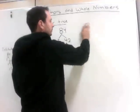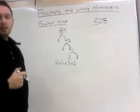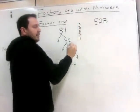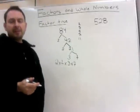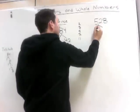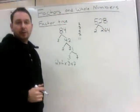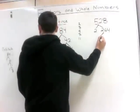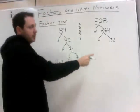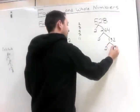Let's look at another number now: 528. I'm again looking for divisors starting with 2, 3, 5, 7, 11, and so on. The number 528 is even, so it divides by 2. 528 divided by 2 is 264. The number 264 is also even; it divides by 2 and is 2 times 132. 132 is also even; it will be 2 times 66.